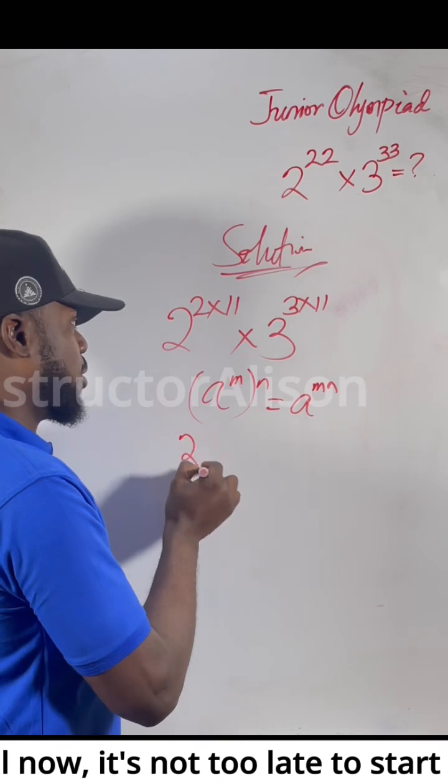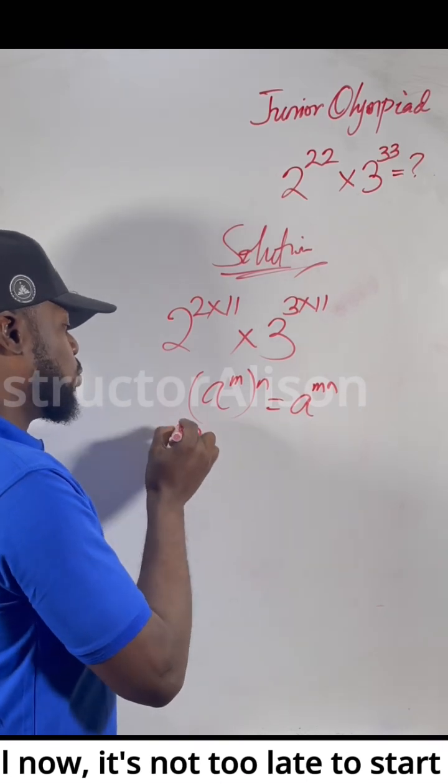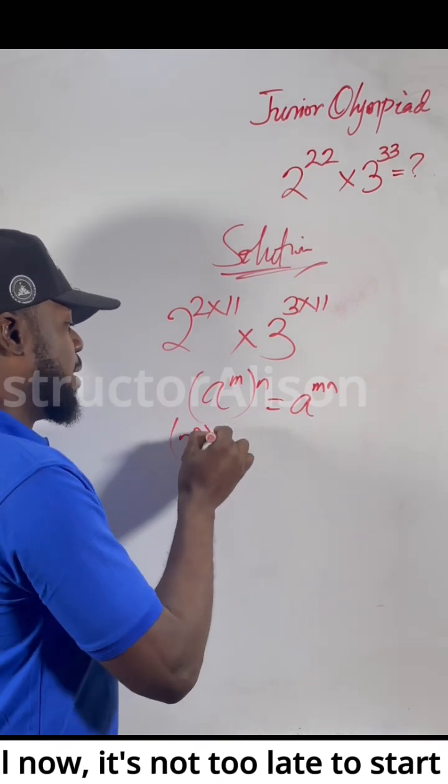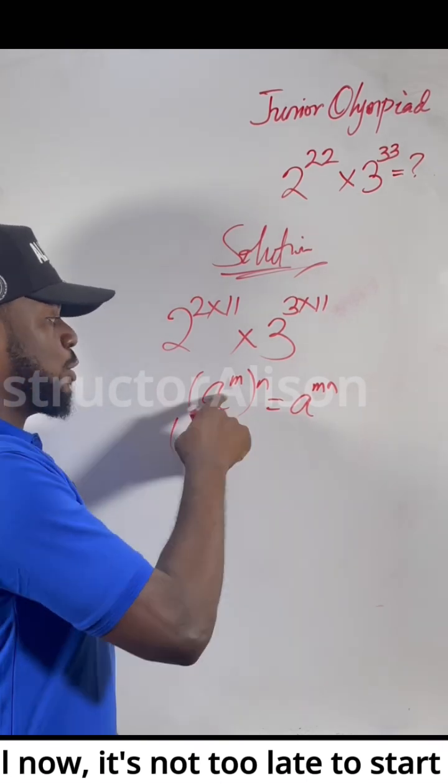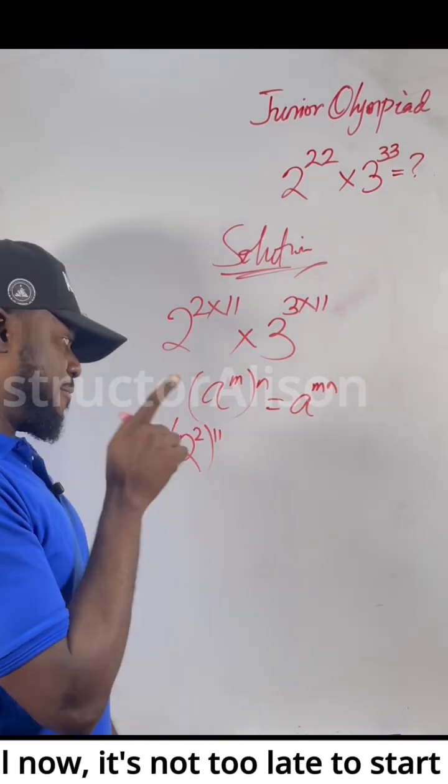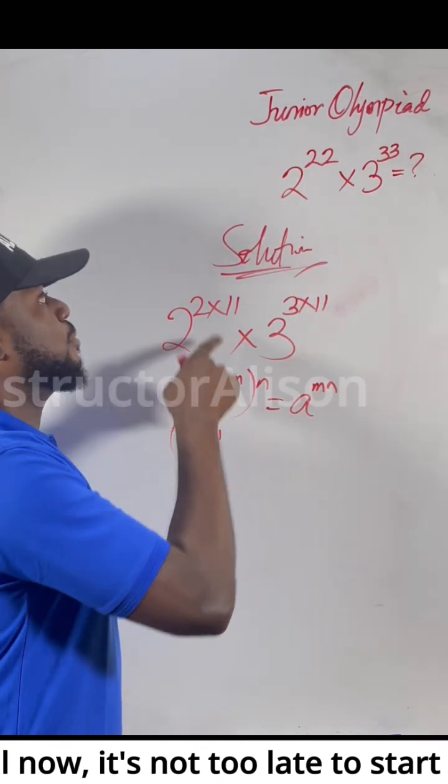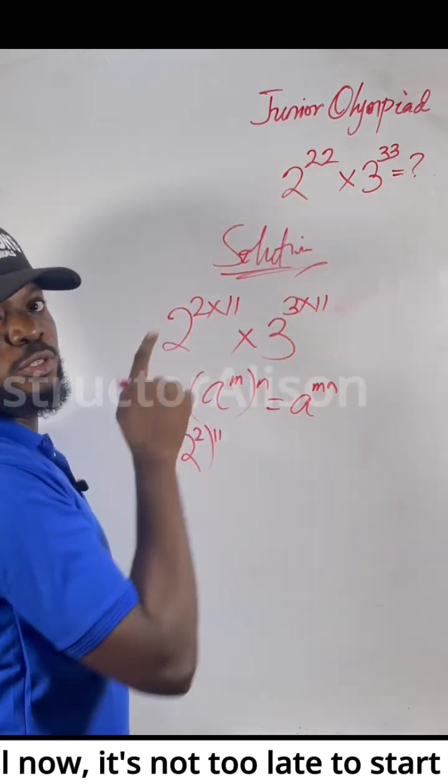Now you see this 2 and 11 — since I want to split them, 2 goes inside and 11 goes outside. This gives us the same thing because 2 times 11 gives us back 22.